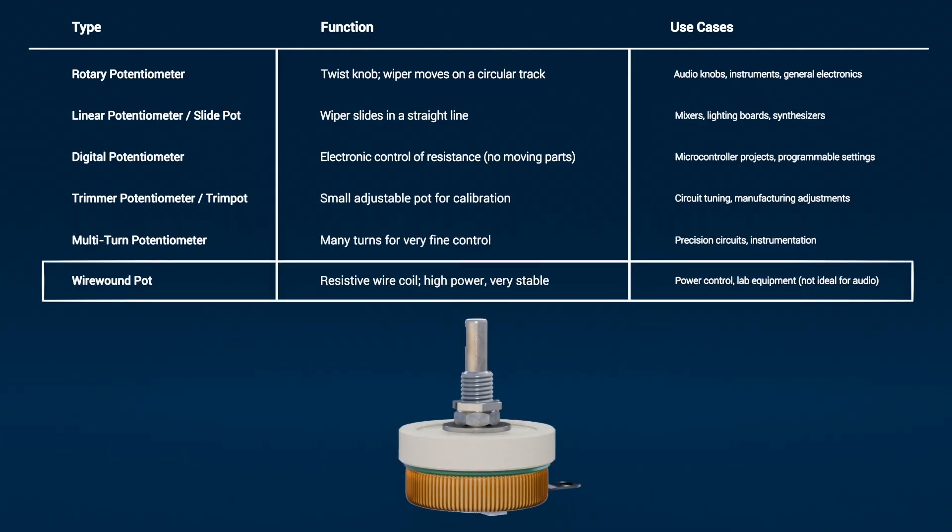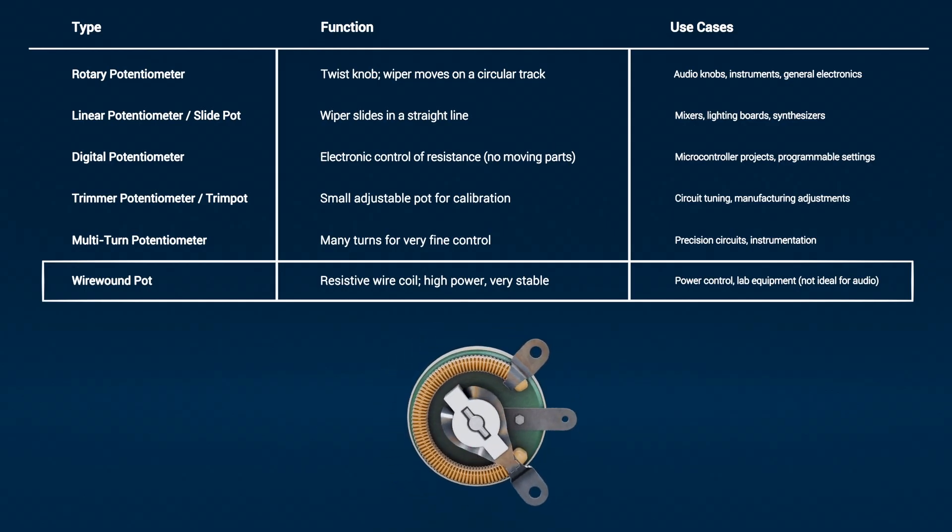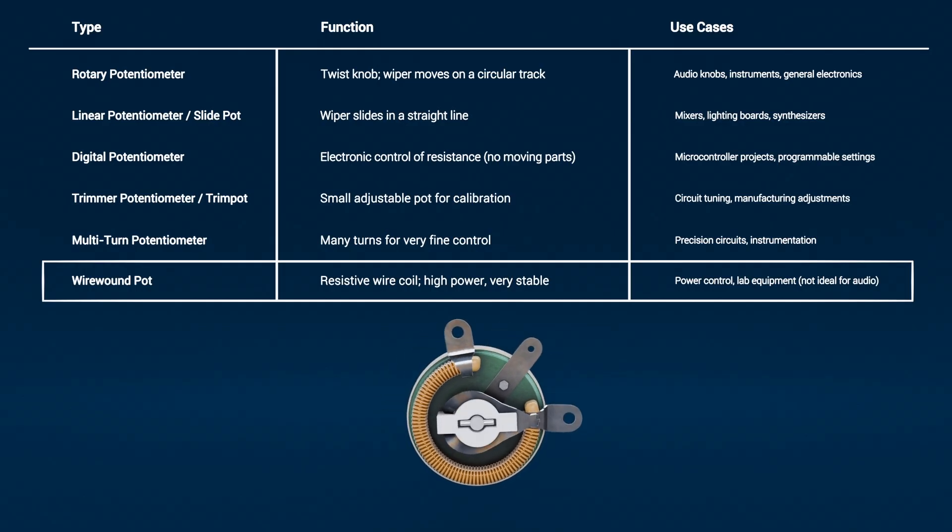Wire-wound potentiometer: Some potentiometers use a fine resistive wire wound around a core. These can handle higher power and offer excellent precision, but the wiper steps across individual wire turns, so they don't give perfectly smooth changes and aren't ideal for audio.